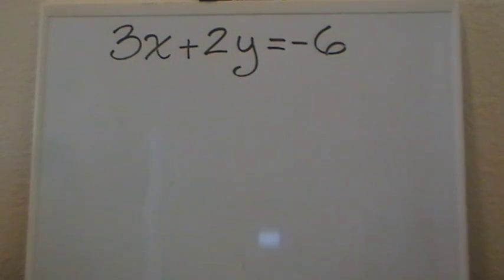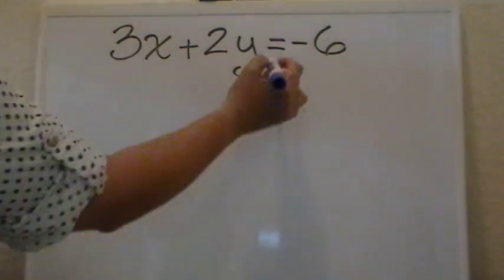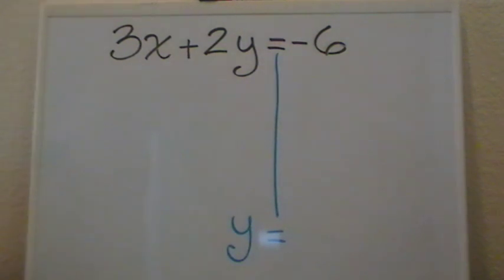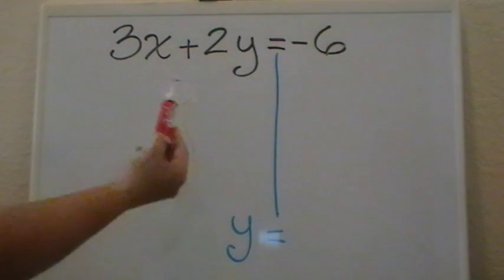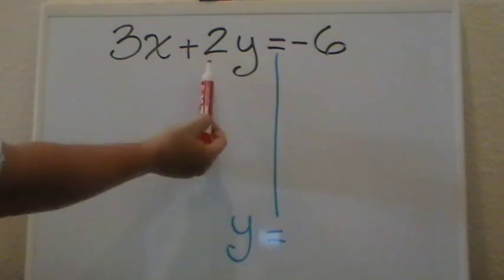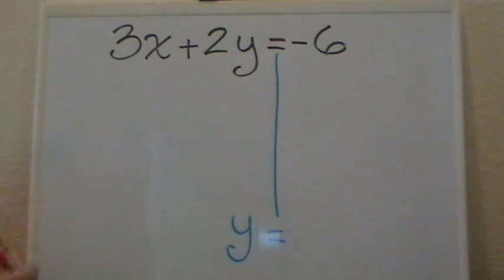So the first thing that I'm going to do is establish my goal, which would be I want to know what y is equal to. So the first thing that I want you to notice is that we have two things that we need to cancel. We need to cancel the number 2, that is the coefficient for y, and we need to cancel 3x.